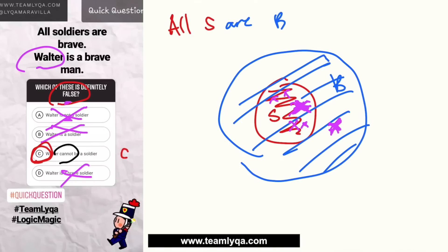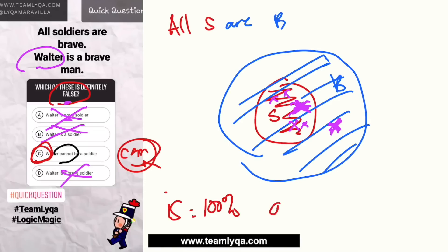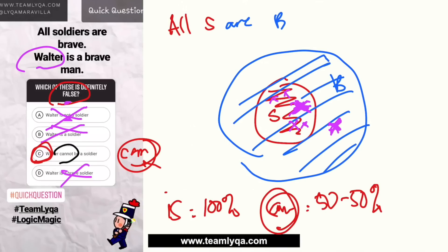Kasi Walter can be a soldier — may possibility siya maging soldier. What I want to emphasize in this question is you have to be careful with the words. Hindi pwede — yung 'is' — ibig sabihin nun 100% true. Yung 'can' — ibig sabihin may probability lang. So pwede 50-50 or kahit lower than that. Yung 'can' talks about possibility, so hindi na siya absolute.